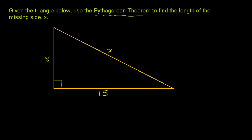The missing side x is the side opposite the 90 degree angle. This is the longest side of this right triangle, which is also called the hypotenuse.